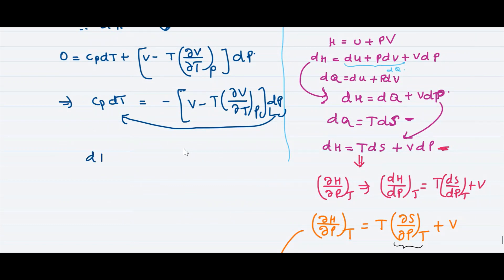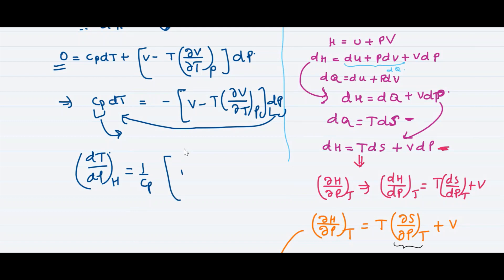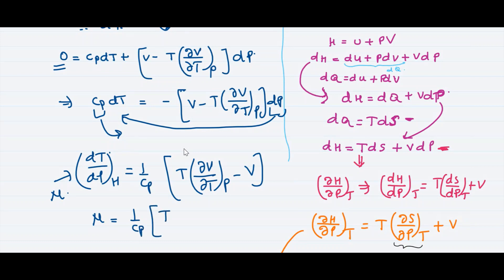Rearranging to isolate dT/dP at constant H, and moving Cp to the other side, we get mu equal to (1/Cp) times [T times (∂V/∂T) at constant pressure minus V]. This is the general formula for mu, the Joule-Thompson coefficient.